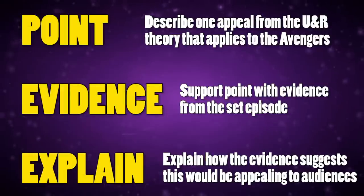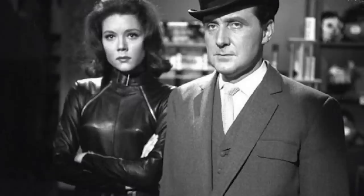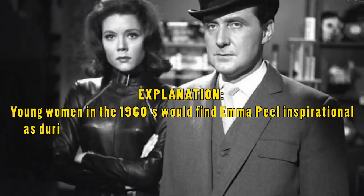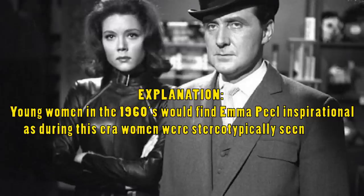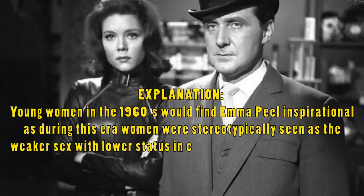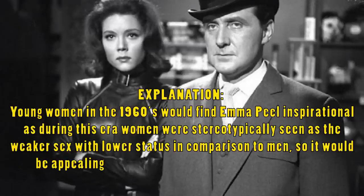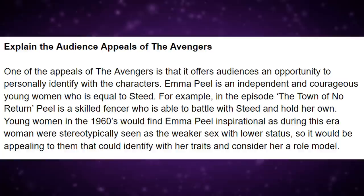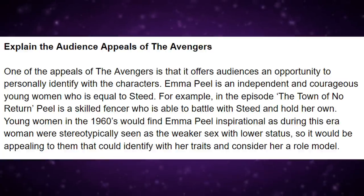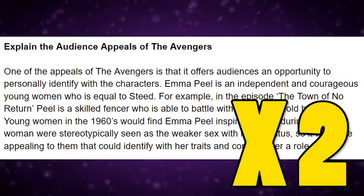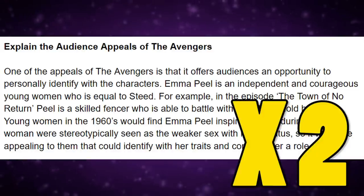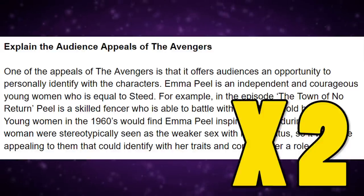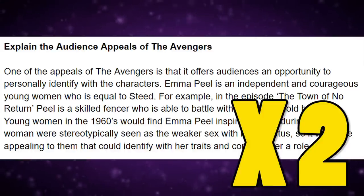Finally, explain how your evidence suggests that this would be appealing to audiences. So the explanation sentence would look like: 'Young women in the 1960s would find Emma Peel inspirational, as during this era women were stereotypically seen as the weaker sex with lower status in comparison to men. So it would be appealing to them that they could identify with her traits and consider her a role model.' That would be one paragraph; you would then move on to writing a second paragraph highlighting a different appeal. A full response to this question is linked in the description.